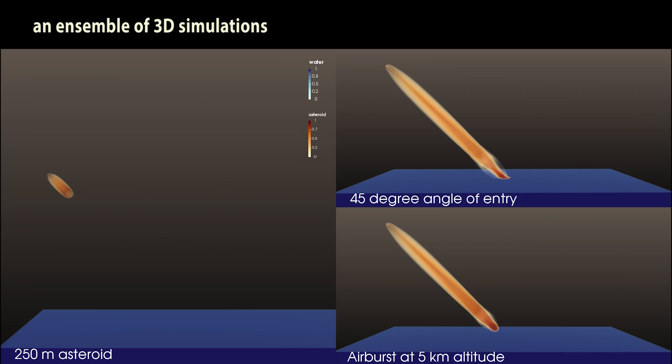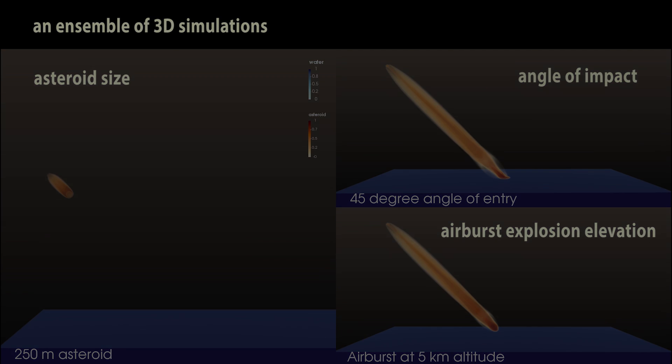Los Alamos scientists ran an ensemble of 3D simulations, varying the asteroid's size, the angle of impact, and whether or not the asteroid exploded in an airburst before impact. The height of this airburst was also varied.